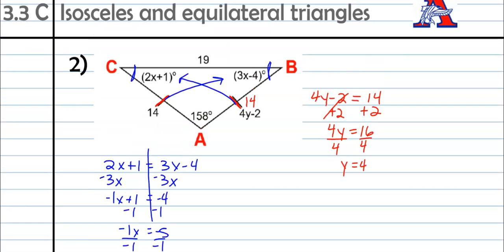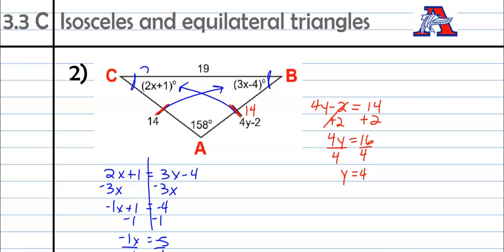With that 5 then, we need to substitute it back in. So 2 times 5 plus 1 is going to be 11 degrees. And then we can check it up here. So 3 times 5 minus 4. Well, 3 times 5 is 15. And 15 minus 4 is 11. So that one is also 11 degrees.